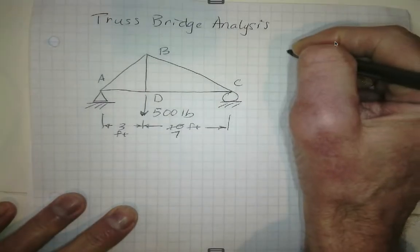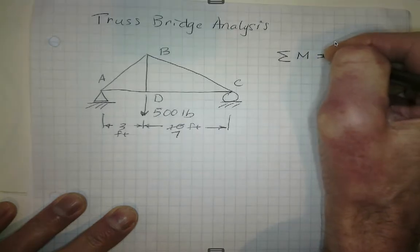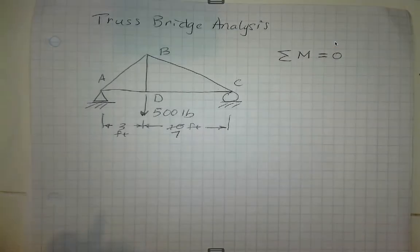We are going to sum the moments around a certain point, and they should be equal to zero. And again, this is because we don't want this truss bridge to move.